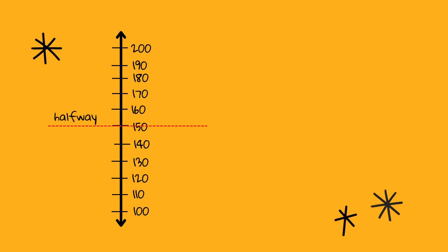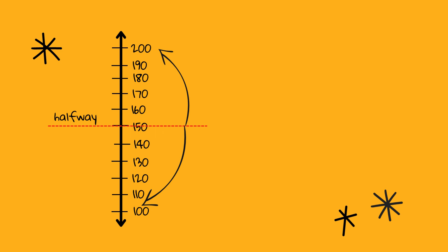The halfway point between 100 and 200 is 150. When we are rounding, if a number is less than 150, we move backward or down to 100. If a number is 150 or above, we round forward or up to 200.